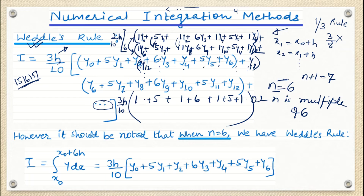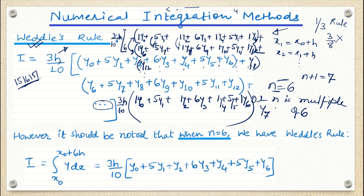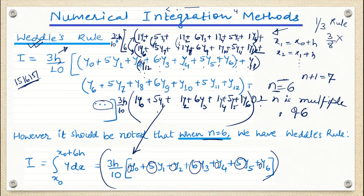So when N equals six only — not a multiple of six beyond that — you stop after Y₆ because you have no ordinate Y₇ or Y₈. This is the simplified Weddle's rule for N equals six: the same 1, 5, 1, 6, 1, 5, 1 sequence and the formula is ready. The definite integral of Y dx has limits from X-naught to X-naught plus 6H, reflecting that 6H is the total length covered by the six equal partitions.